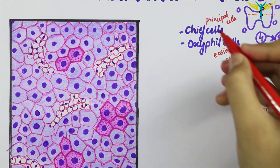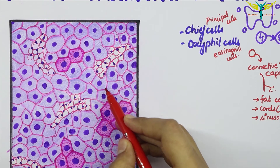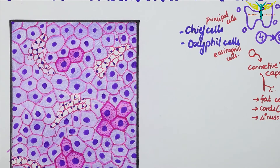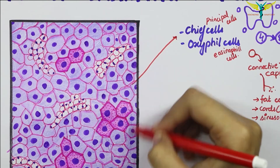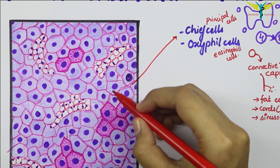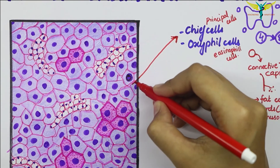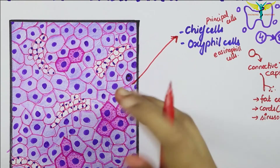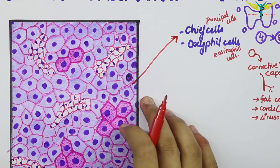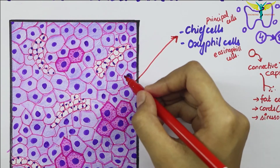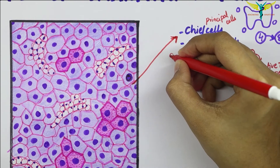In this diagram, the darkly stained cells are called chief cells or principal cells — those in which we can see the dark-stained nuclei. The chief cells are much more numerous than the oxyphil cells. With the light microscope, chief cells are seen to be small round cells with vesicular nuclei.